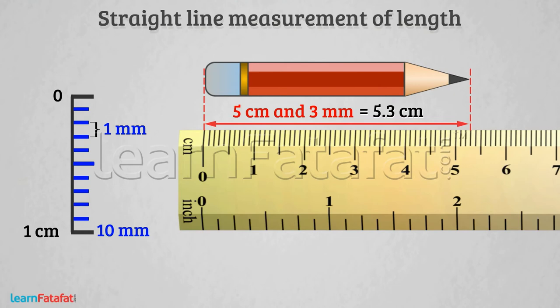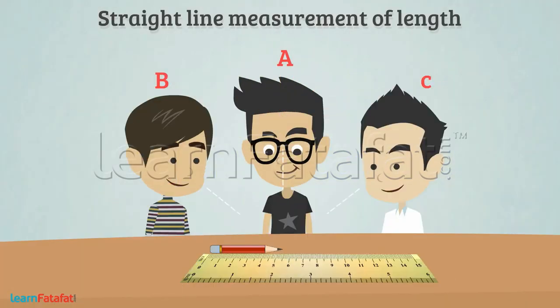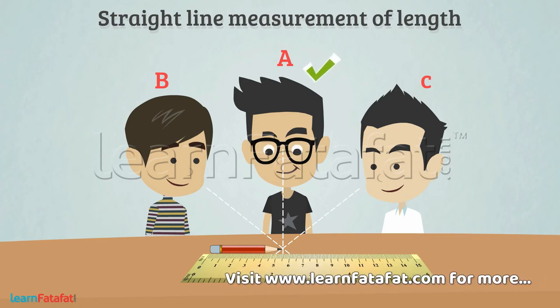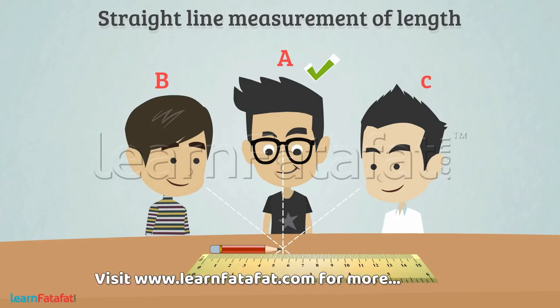One more important thing while measuring the length is correct position of the eye. From different positions, we get different readings. Therefore, position A is the correct position and position B or position C are wrong positions.